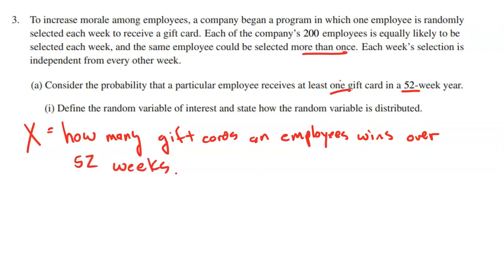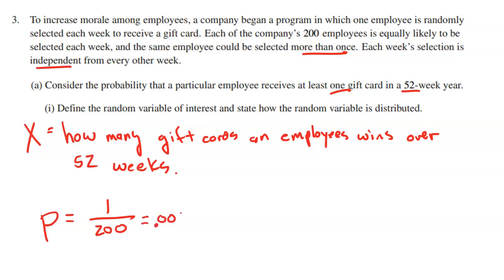It did say that an employee could win more than once, and the selection is independent from week to week, so what happens one week has absolutely no bearing on the next. Now when we talk about a probability distribution, we need the probability of success. What is the probability that an employee successfully wins in any one week? There are 200 names in the proverbial jar, and only one has your name on it — so each employee has a 1 out of 200 chance, a probability of 0.005 or 0.5%.